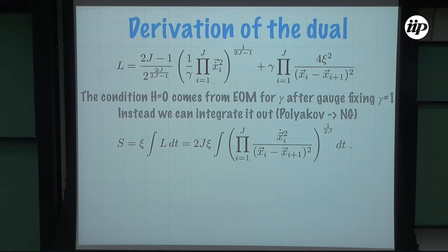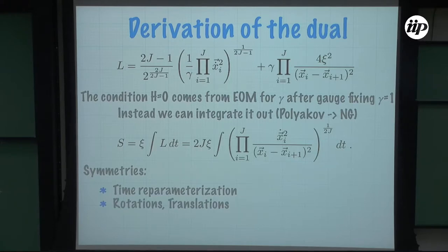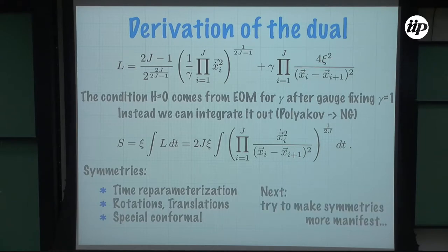Like going from the Polyakov to the Nambu-Goto formulation, we integrate out γ. Since γ has a gauge symmetry it can be any function — in particular we can set it to its extremal value. If I do that I get a very cute Lagrangian. Now many symmetries become more clear: time reparameterization is obvious since I have 2j factors of ẋ. It also has translational symmetry and rotational symmetry. What is less obvious is that there is also a special conformal transformation which goes through this Lagrangian.